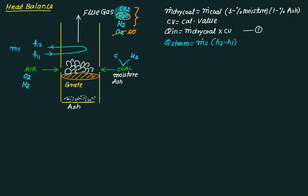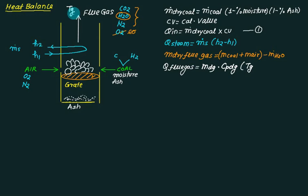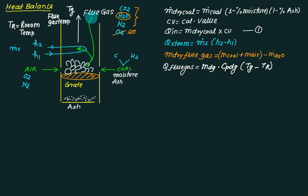All these constituents are called flue gas. If you subtract the mass of water vapor from flue gas, it is called dry flue gas. Heat carried by dry flue gas equals mass of dry flue gas multiplied by Cp of dry gas multiplied by (Tg minus Tr), where Tg is the flue gas temperature and Tr is the room temperature.